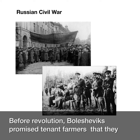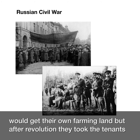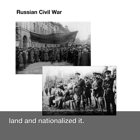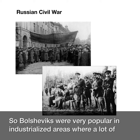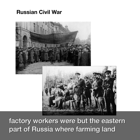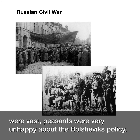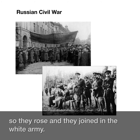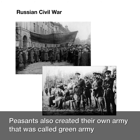Before the revolution, the Bolsheviks promised tenant farmers they would get their own farming land. But after the revolution, they took the tenants' land and nationalized it. So Bolsheviks were very popular in industrialized areas with many factory workers, but in the eastern parts of Russia where farming land was vast, the peasants were very unhappy about Bolshevik policy. They rose up and joined the White Army. Peasants also created their own army, called the Green Army.